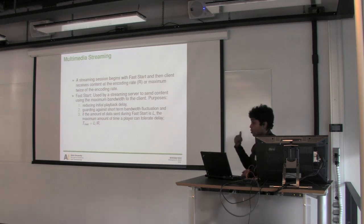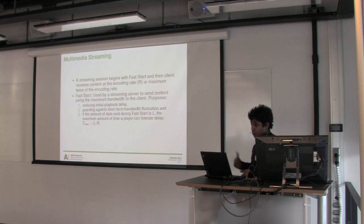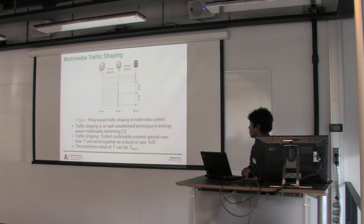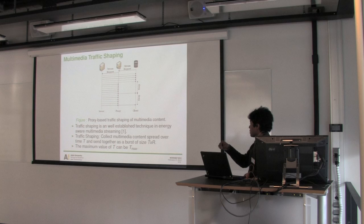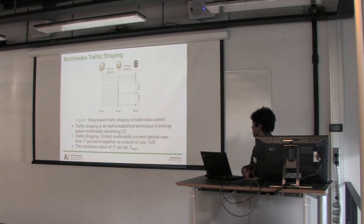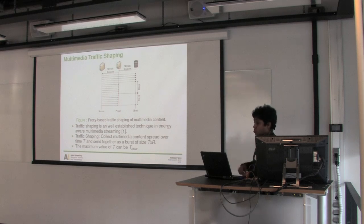The maximum delay the player can tolerate is called Tmax. If the content sent during fast start is L and the encoding rate is R, then the client can tolerate Tmax amount of delay during playback. In a proxy-based traffic shaping scenario, during fast start the proxy forwards traffic, but after that it starts buffering data from the server for an interval T, called the burst interval. It then sends a single burst to the client, and between consecutive bursts the mobile client receives nothing, so it can go into a low power consuming state.